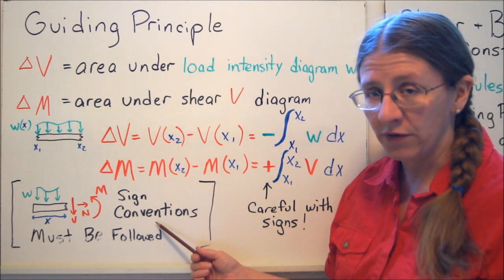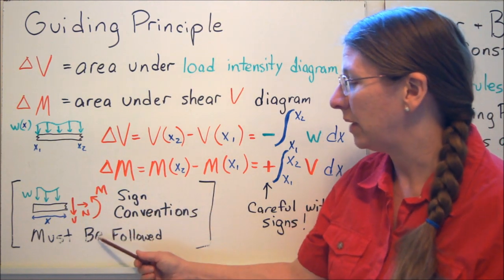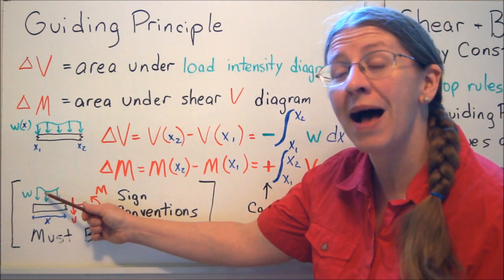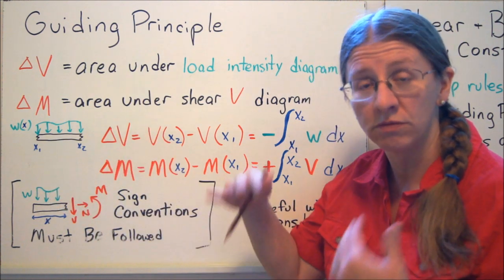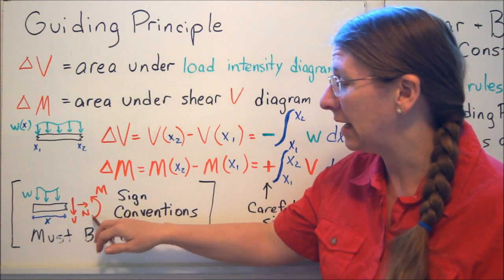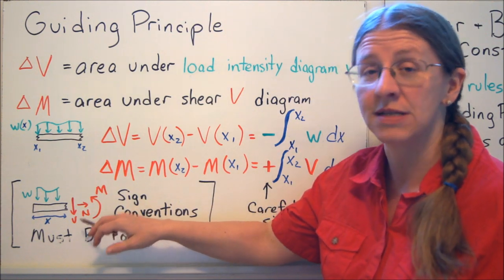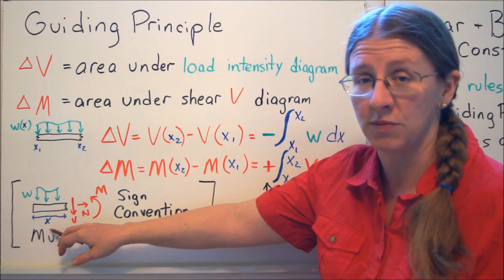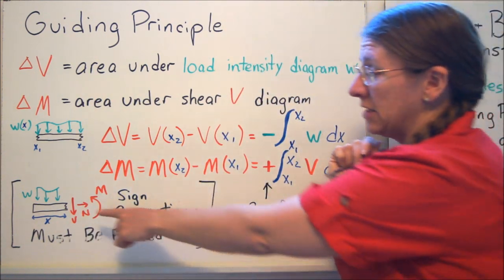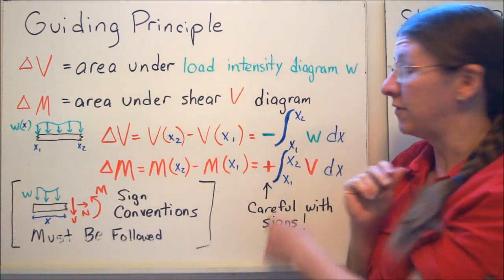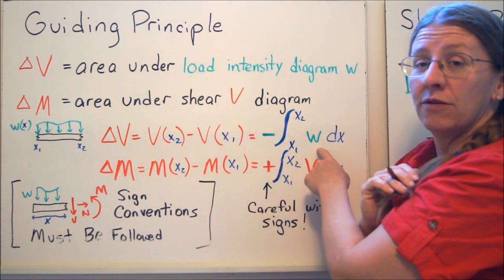Be careful with your sign conventions. These have to be followed so that you have W is positive down, that's because we usually use gravitational loads, and V and M are as shown here. This is the left hand side of the beam so that X comes from the left. Be careful here with your signs too. Because of this sign convention where W is positive down, this has a negative sign in front of the integral.